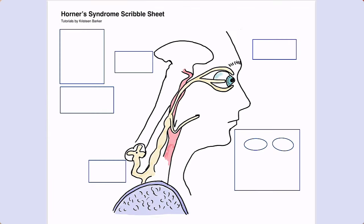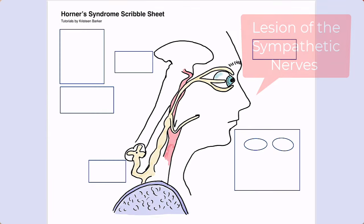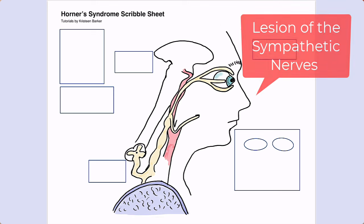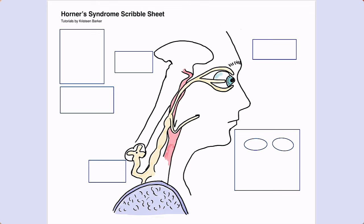Horner's syndrome happens due to a lesion of the sympathetic nervous system affecting the eye and the face. In the sympathetic pathway there are three neurons of interest: first-order neurons, also called central neurons; second-order neurons, also called preganglionic neurons; and third-order neurons, also known as postganglionic neurons. Depending on which of these neurons is affected, there may be other clinical signs which go along with that pathology.